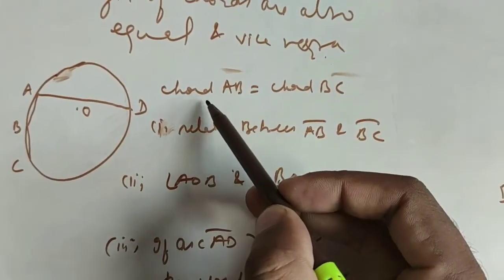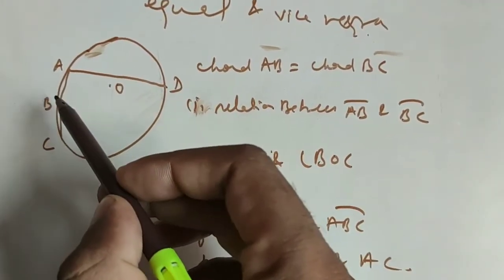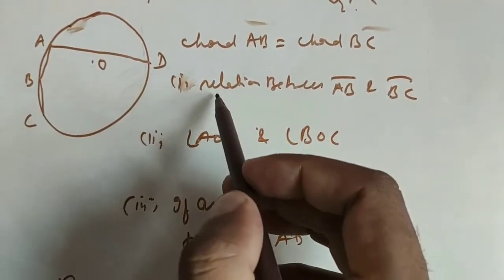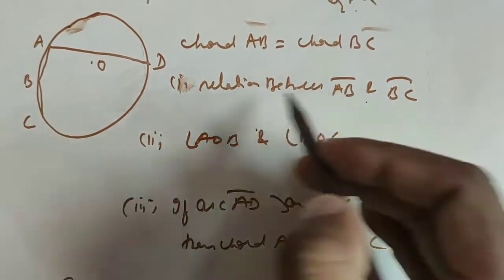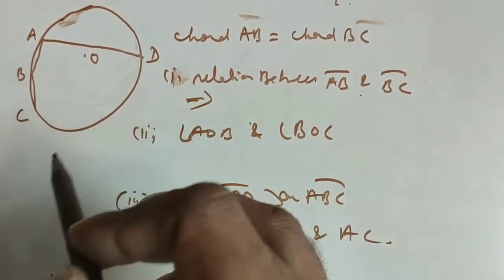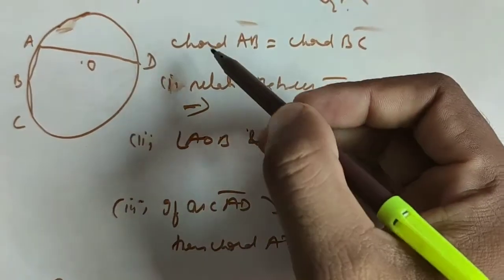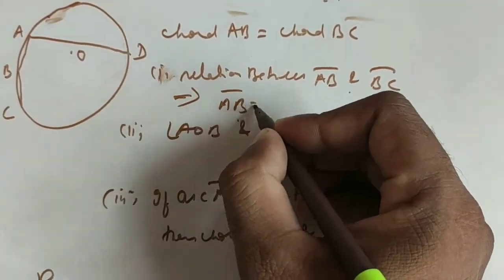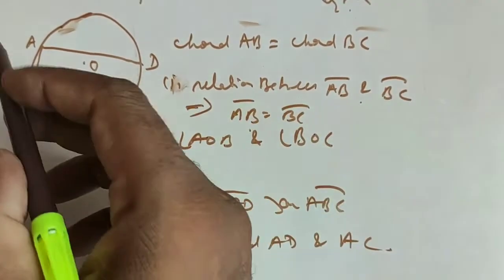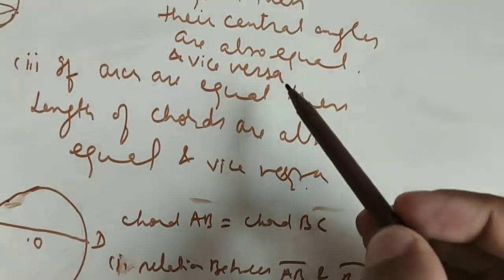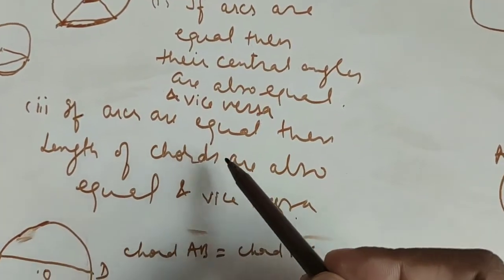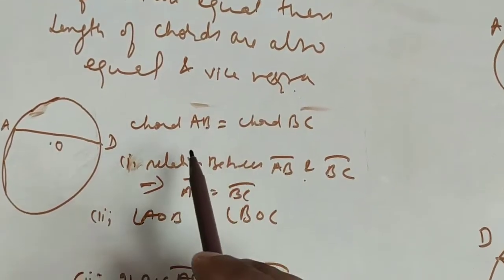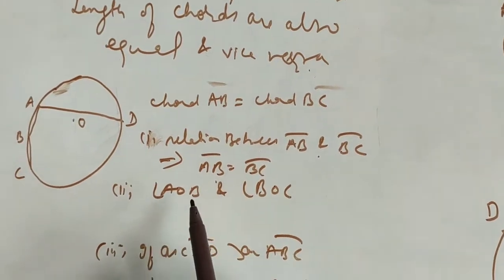In the first example, it is given that chord AB and chord BC are equal. We have to find the relation between arc AB and arc BC. Since chords are equal, then arcs are equal, so arc AB will be equal to arc BC. If chords are equal, then arcs are also equal.